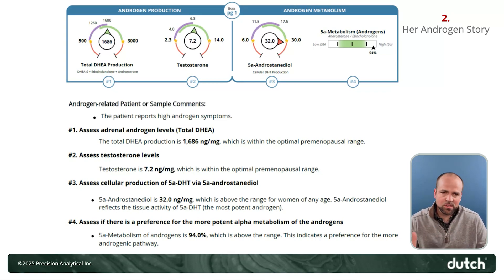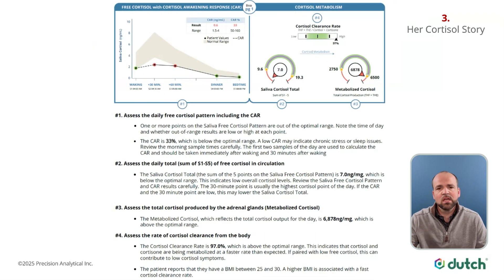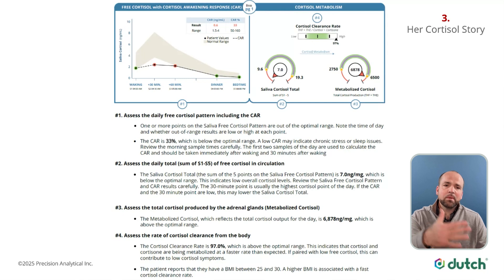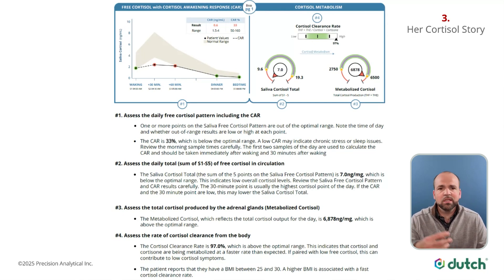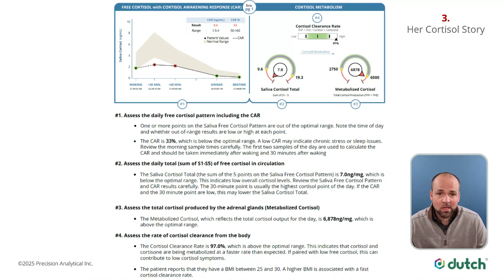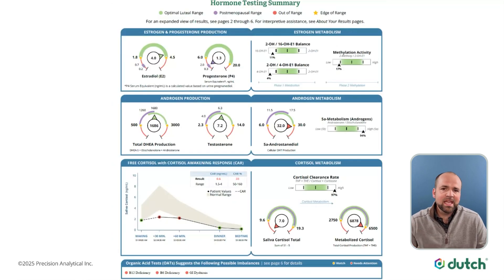For each patient, we'll walk through the four key elements of estrogens, androgens, and then cortisol. For cortisol, we're looking at the up-and-down diurnal pattern, the total of the free cortisol — whether urine in a Dutch Complete or saliva in a Dutch Plus — and then the total of the metabolites. Comparing those infers the cortisol clearance rate, which is your fourth element. So again, walking through the key elements of the cortisol story.